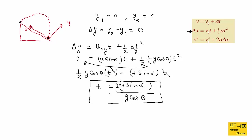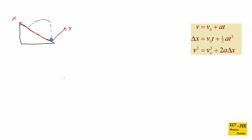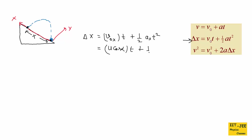In problems, you will be given u, alpha, and theta — just plug in values to solve for time of flight. Next, we find the range — the maximum horizontal displacement from the initial point to the final point. Using the horizontal displacement equation: Δx = ux·t + ½ax·t² = u cos alpha · T + ½(-g sin theta)·T², where T is the time of flight.